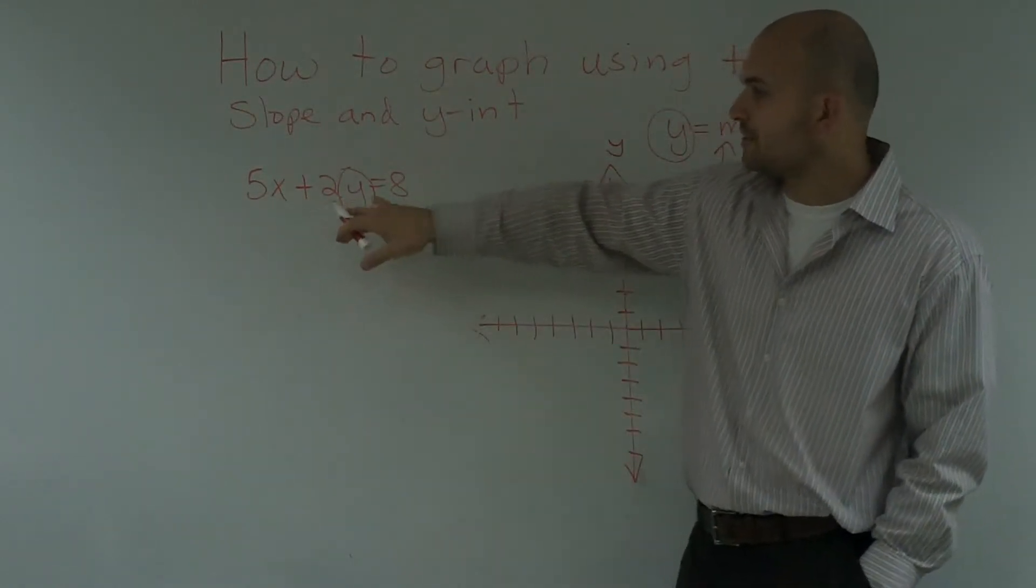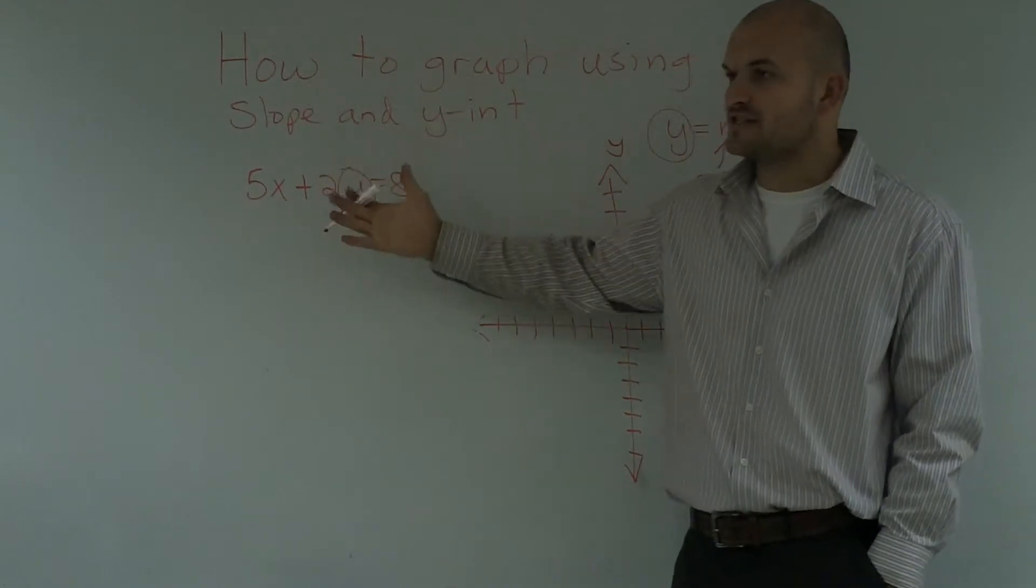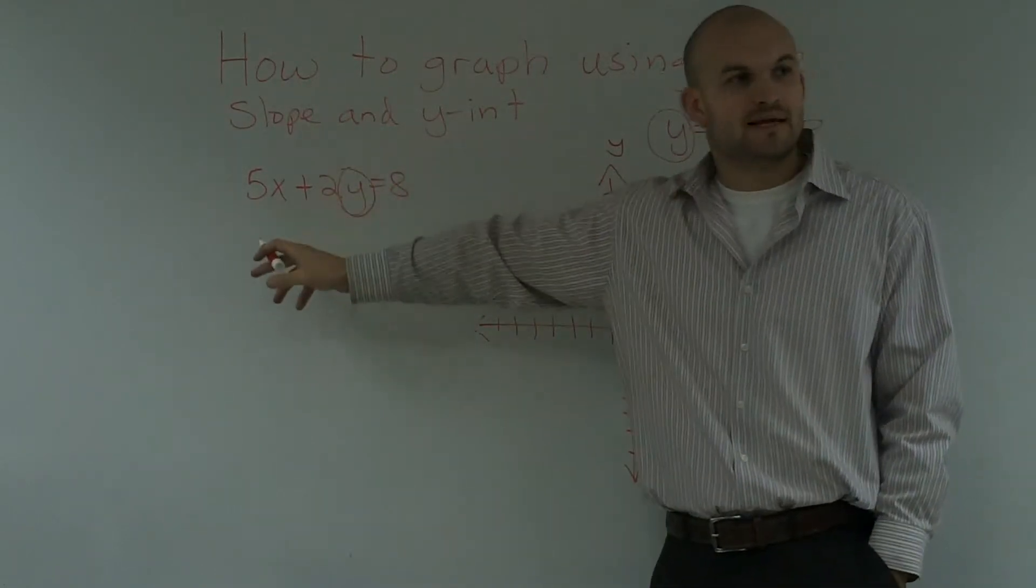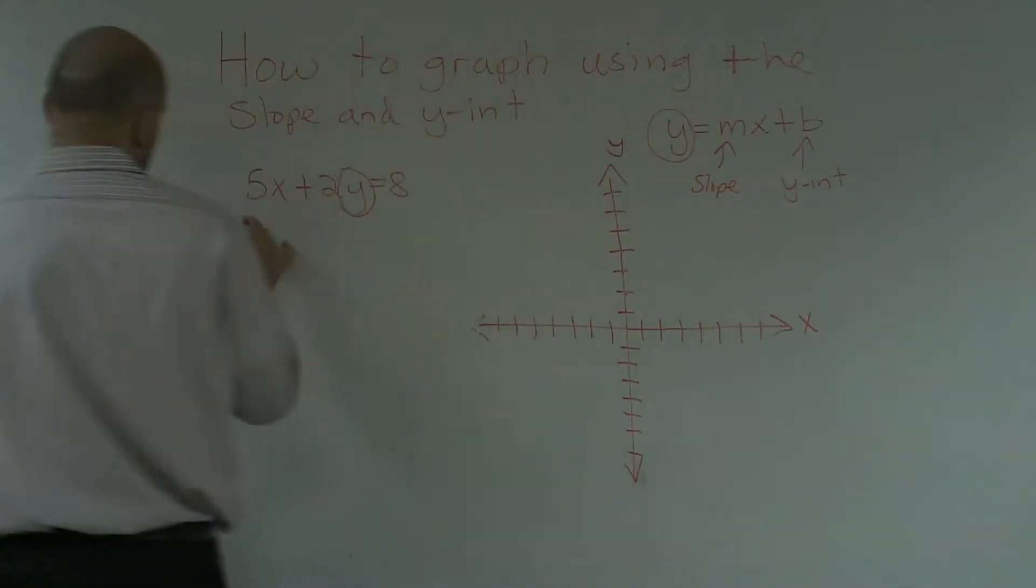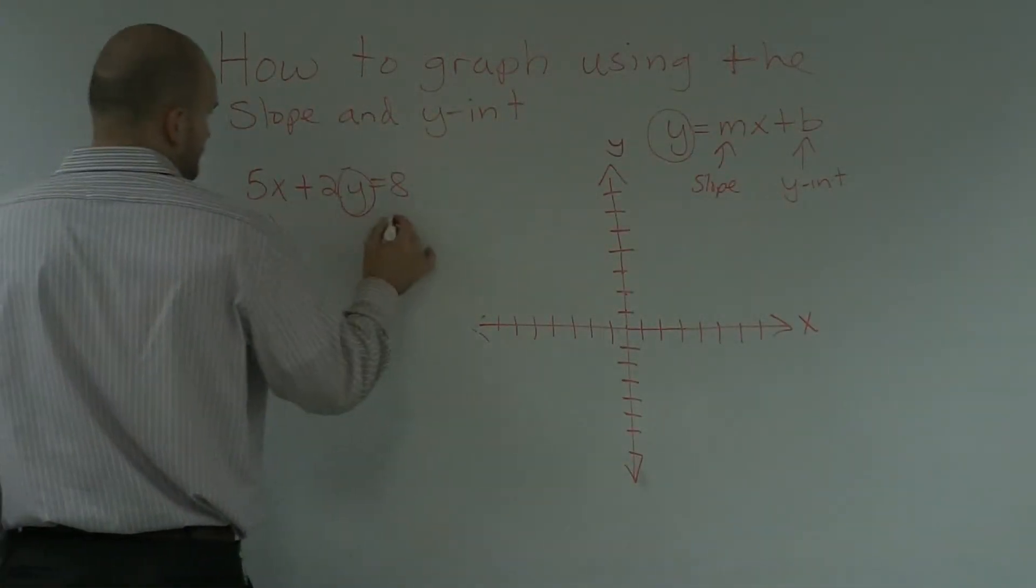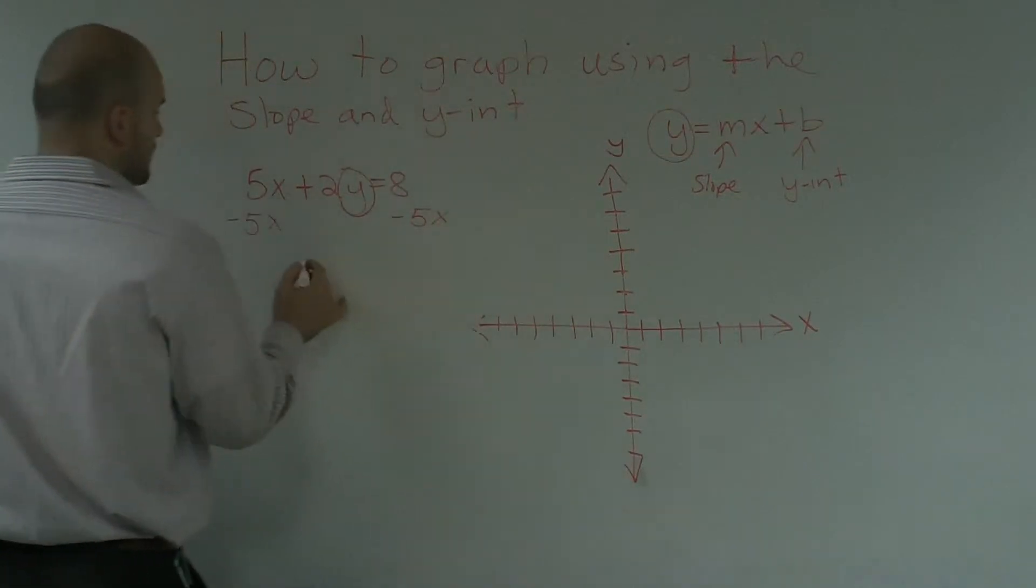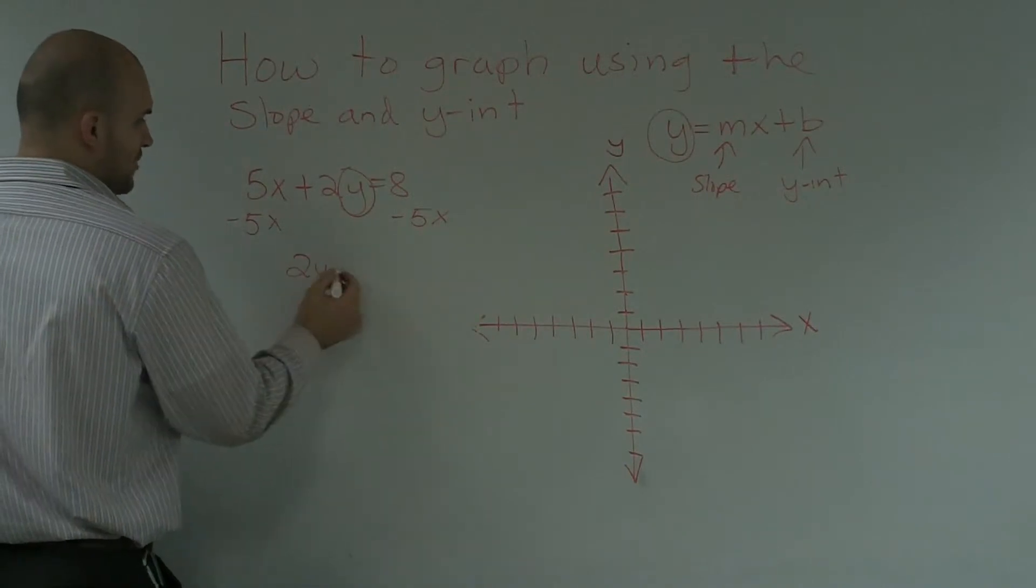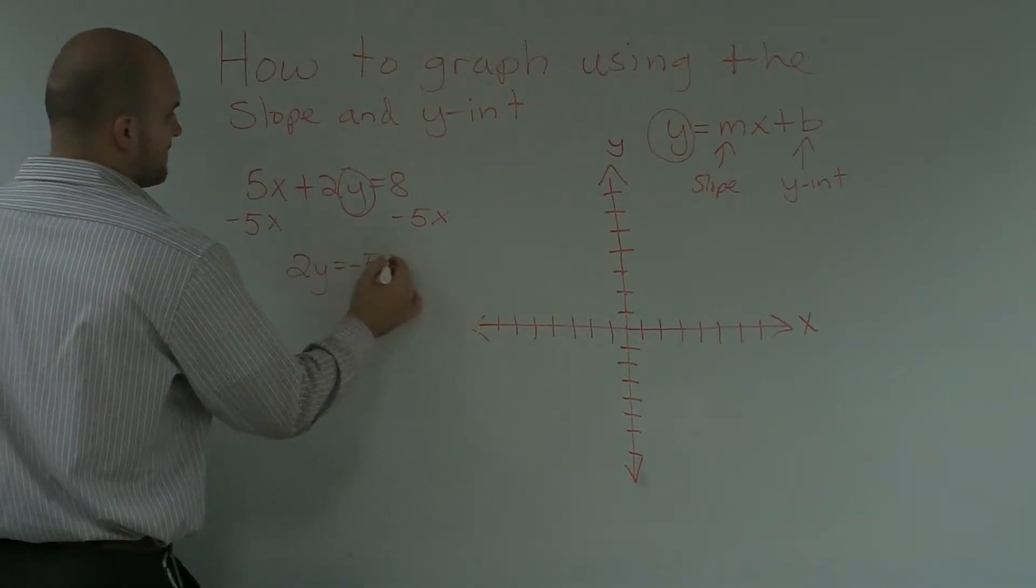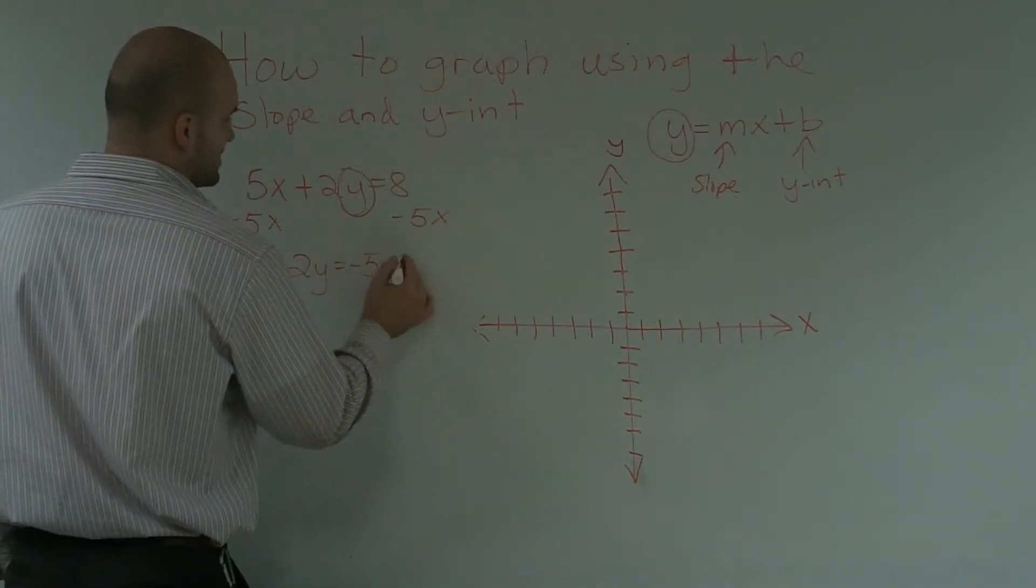So I look at my variable and I say, what are the two operations that it has? Well, it's being multiplied by 2 and it's also being added by 5x. So to undo addition of 5x, I'm going to subtract 5x. Therefore, I'm left with 5x minus 5x becomes 0. So I'm not going to write my 0, but I have 2y equals negative 5x plus 8.